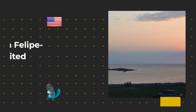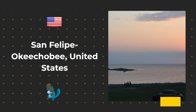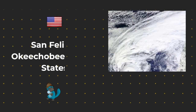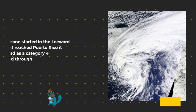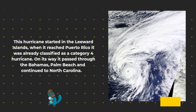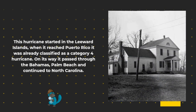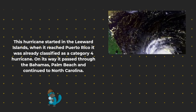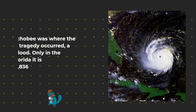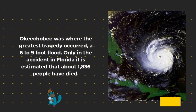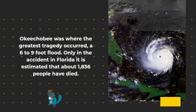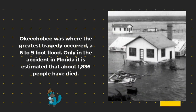San Felipe Okeechobee, United States: This hurricane started in the Leeward Islands, and when it reached Puerto Rico, it was already classified as a category 4 hurricane. On its way, it passed through the Bahamas, Palm Beach, and continued to North Carolina. Okeechobee was where the greatest tragedy occurred — a 6-to-9-foot flood. In Florida alone, it is estimated that about 1,836 people died.